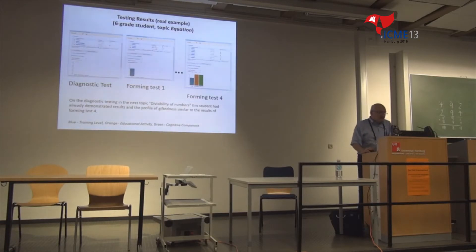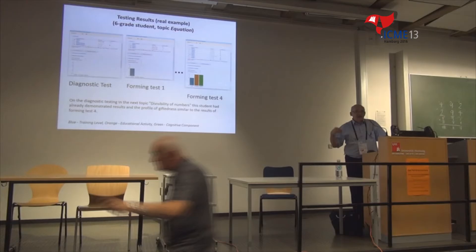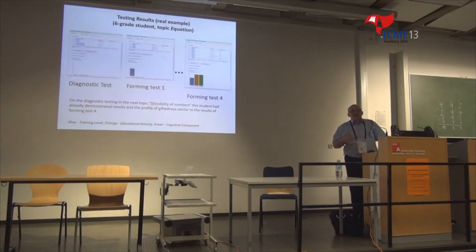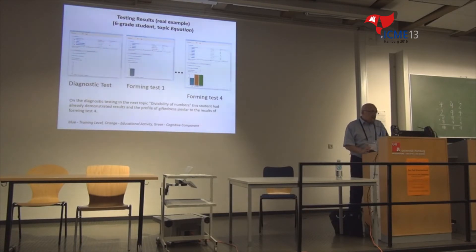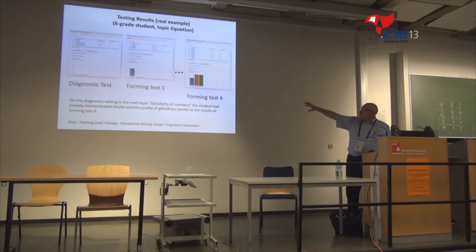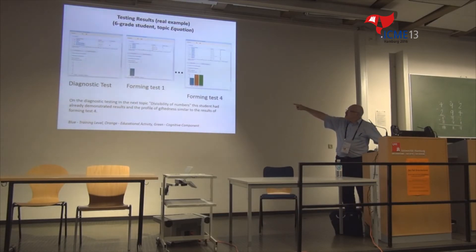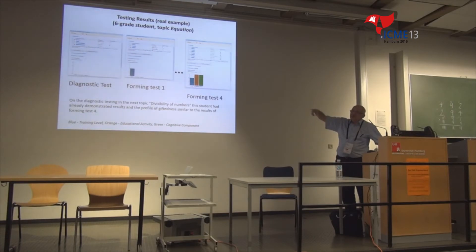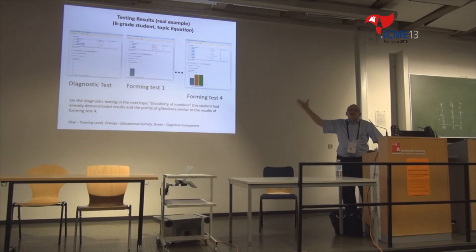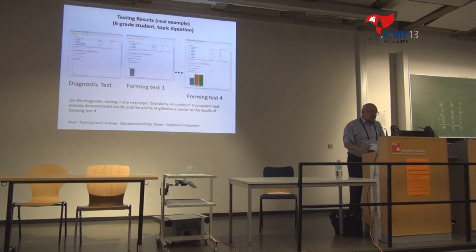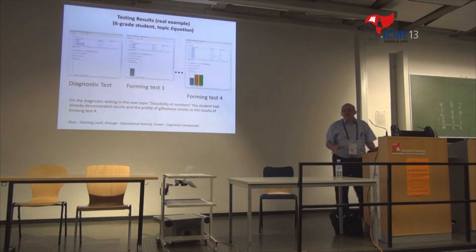This system was tested — it has been in development for 10 years. In April and May of this year there was testing, and this is the result of one student. In the middle you can see the initial profile, which shows only one rectangle out of three possible. After going through those exercises, this is the final profile — as we can expect, something has improved.